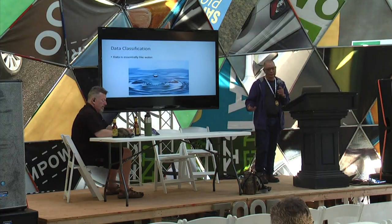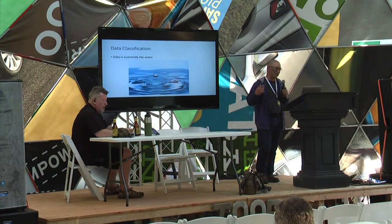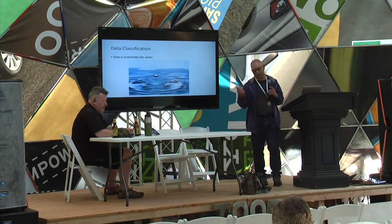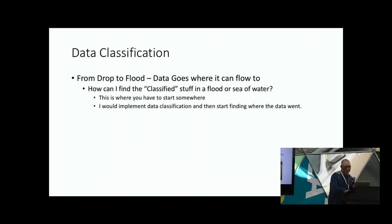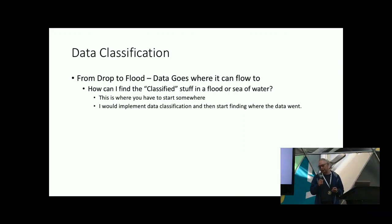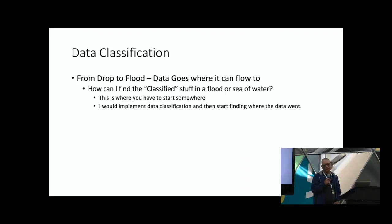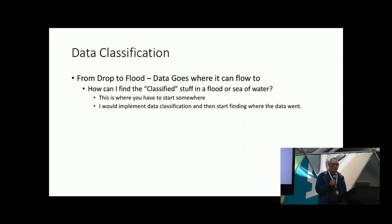Somebody asked me to explain how this all works. For data classification, we have a single file — that little drop, single file, not a problem. Petabytes? I can't even. From drop to flood, where the hell does it go? I walk into an organization, they have EMCs, they have everything — petabytes, hundreds of terabytes of data. They ask me: I need you to find all the PII. Can you tell me where the PII is? And I'm like: no.